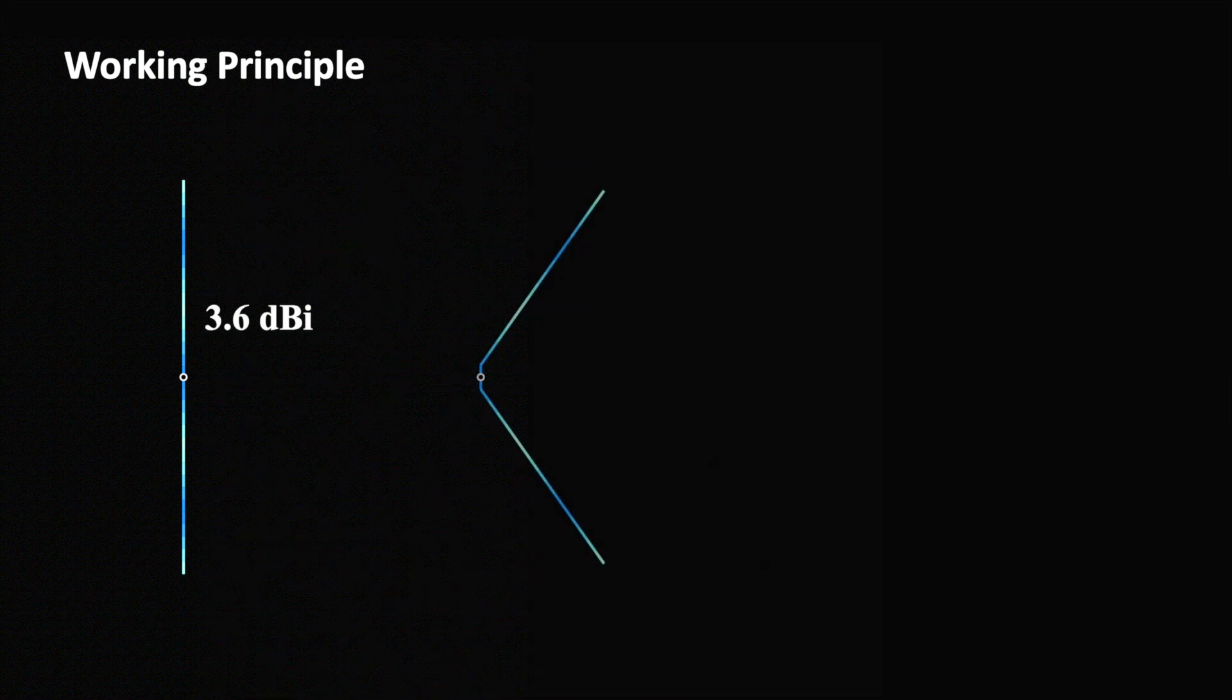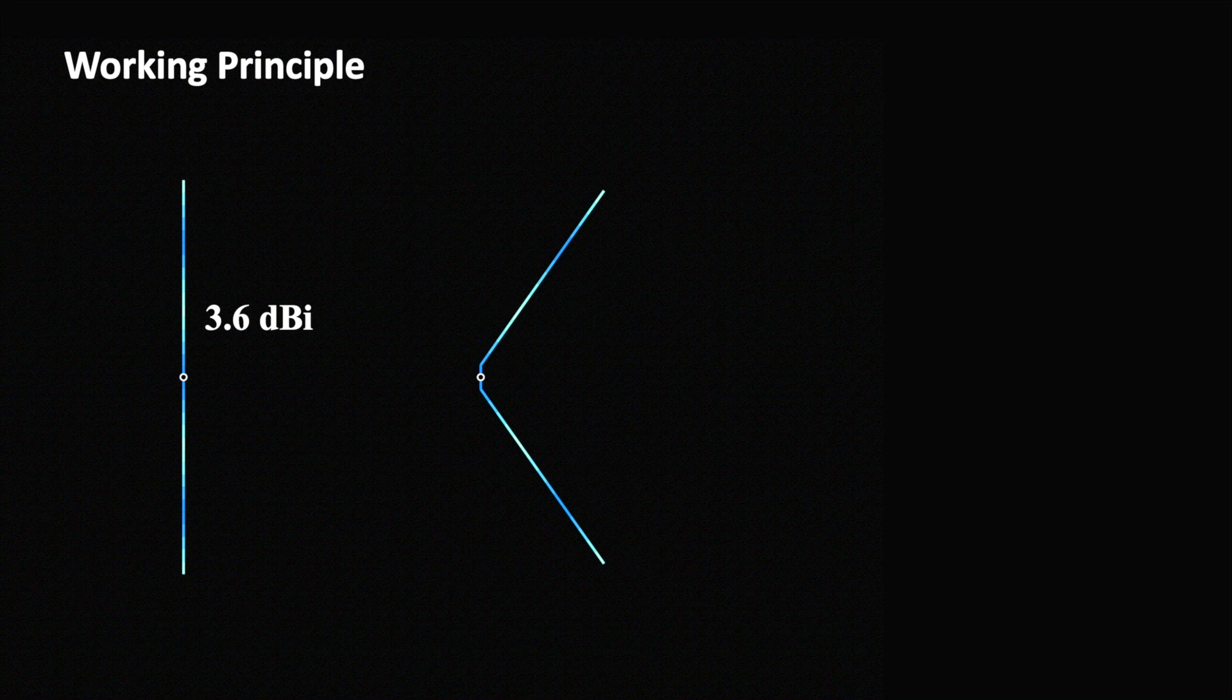Then we were computing the optimum angle for a V antenna. Its maximum directivity is 6 dBi at a pitch of 54.3 degrees which corresponds to an angle of 108.6 degrees between the rods or wires.